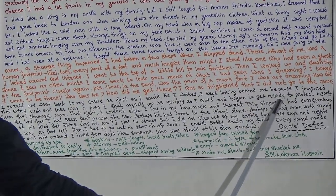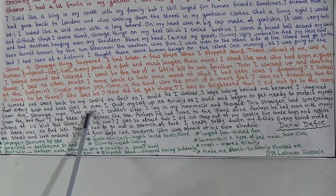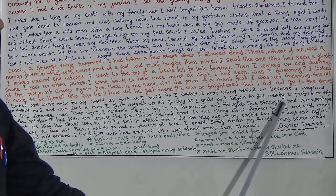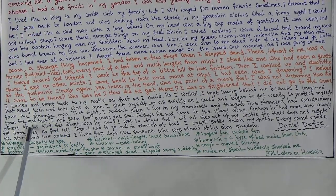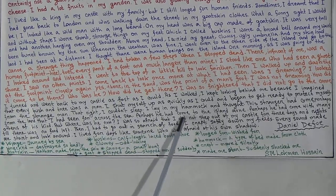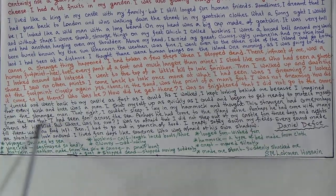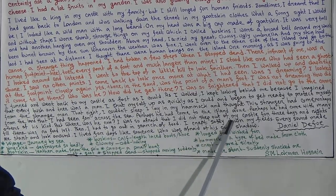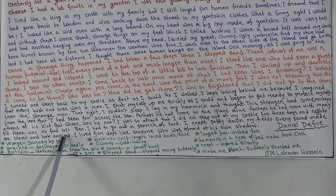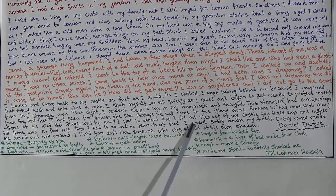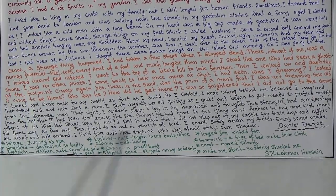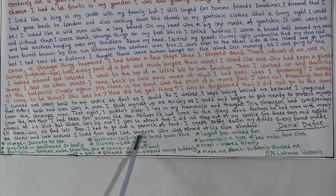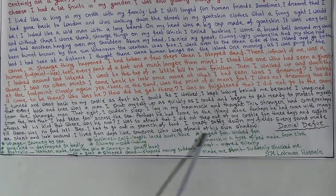'I shut myself up as quickly as I could and began to get ready to protect myself from the strange man. That night I couldn't sleep. I lay in my hammock' — hammock means a type of bed made from cloth — 'and thought. This stranger had come perhaps from the land I had seen far across the sea. Perhaps he had come to the island alone, perhaps with many others of his kind. But where was he now? I was so afraid that I didn't step out of my castle for three days and nights till there was no food left. Then I had to go out in search of food. I crept softly down my fields. Every sound made me start and look around.' He lived for days like someone afraid of his own shadow.